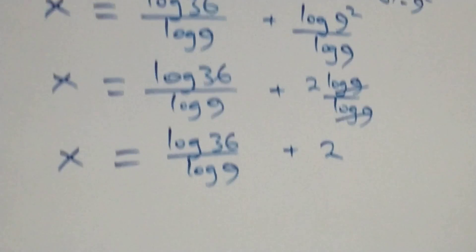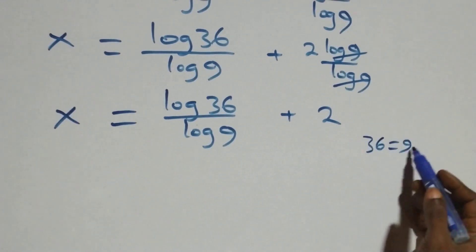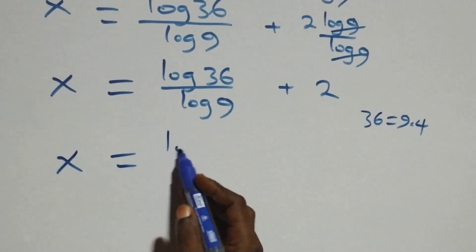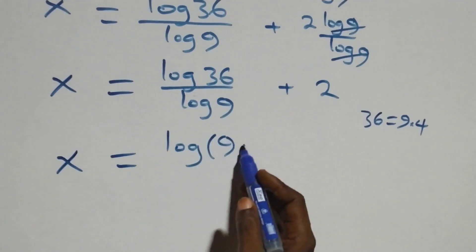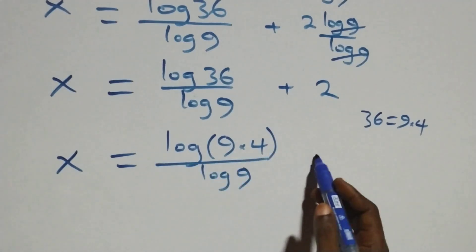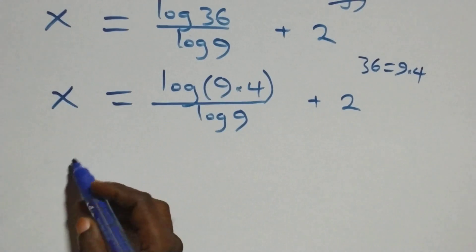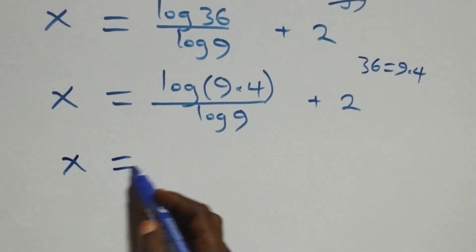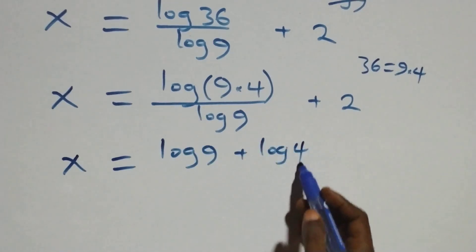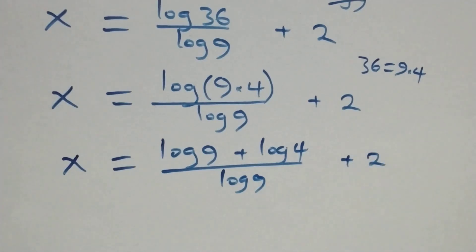From here we can rewrite 36 as 9 times 4, giving x equals log of 9 times 4 over log 9 plus 2. This follows from the log product rule, so we can write it as x equals log 9 plus log 4, all over log 9, plus 2.